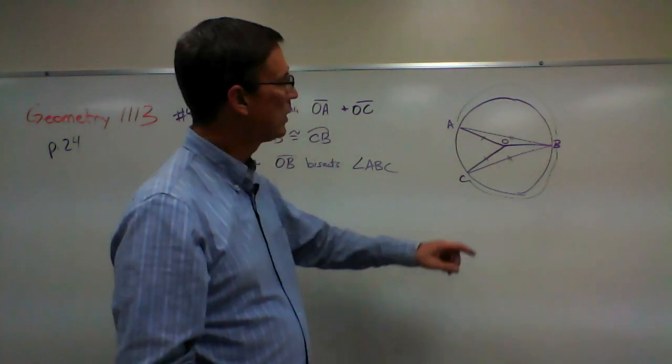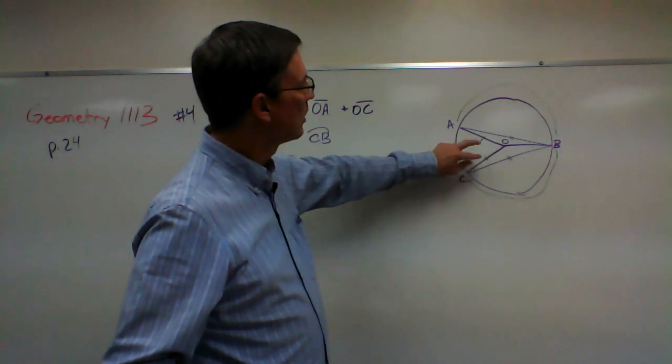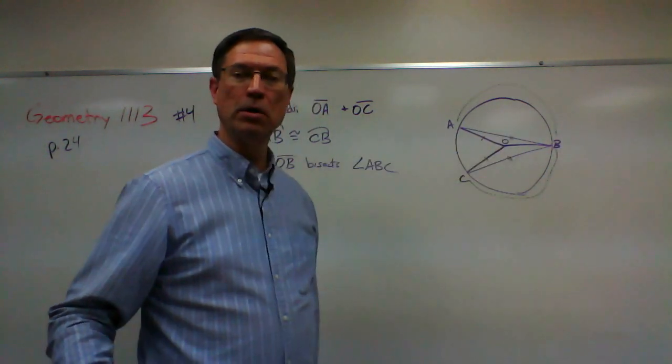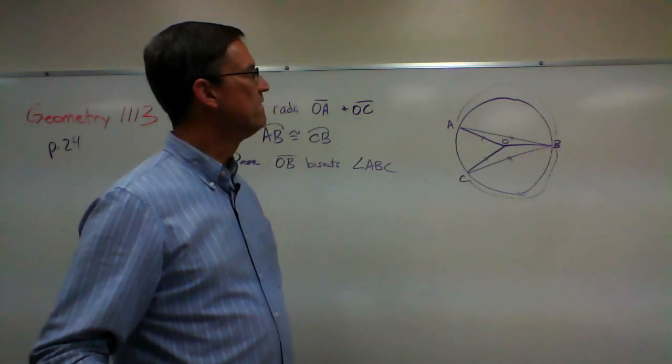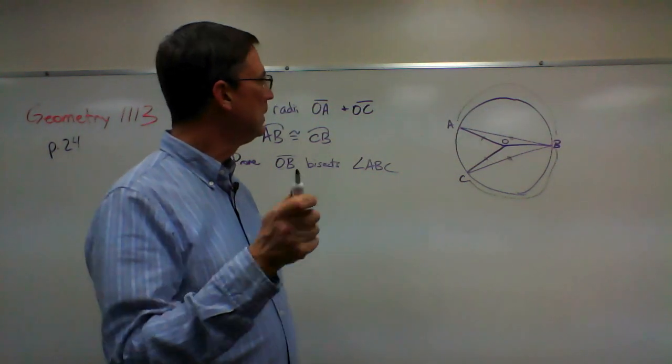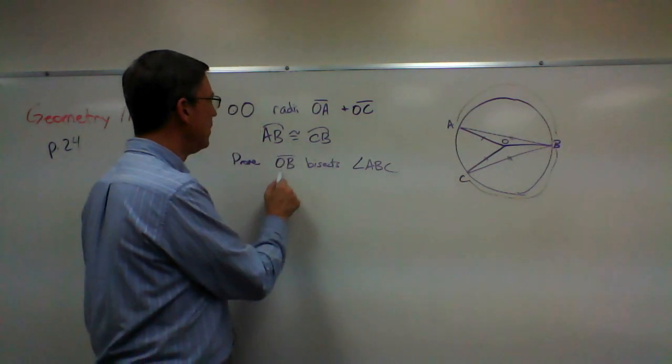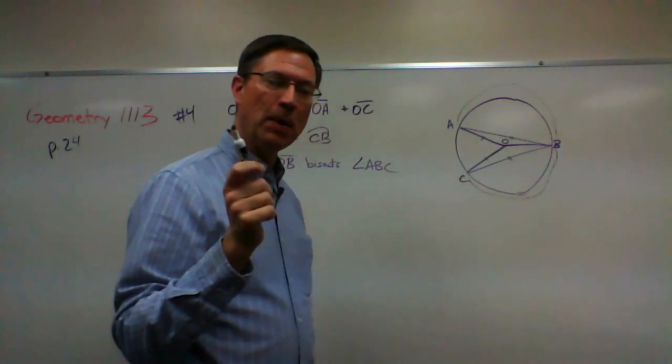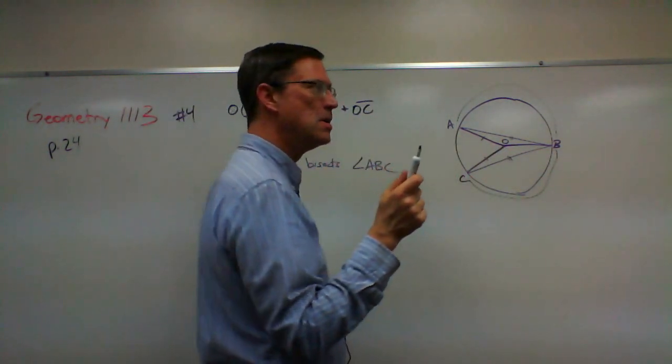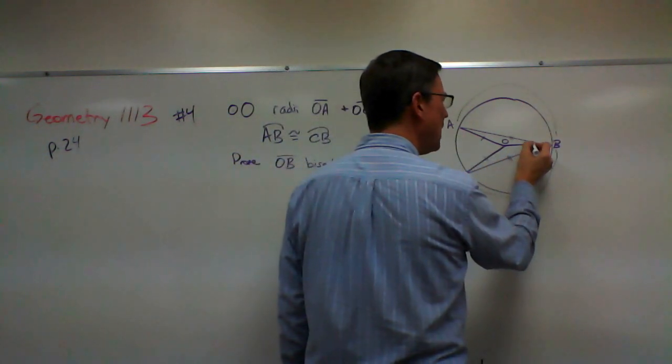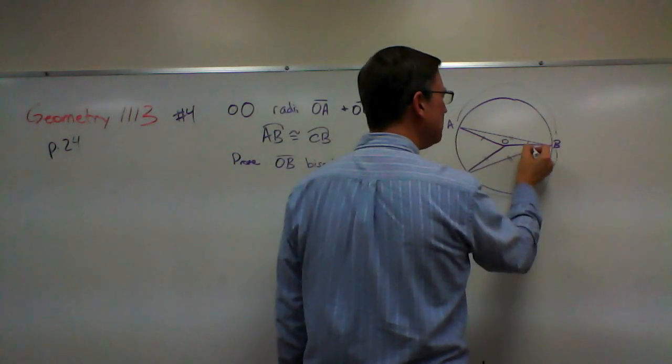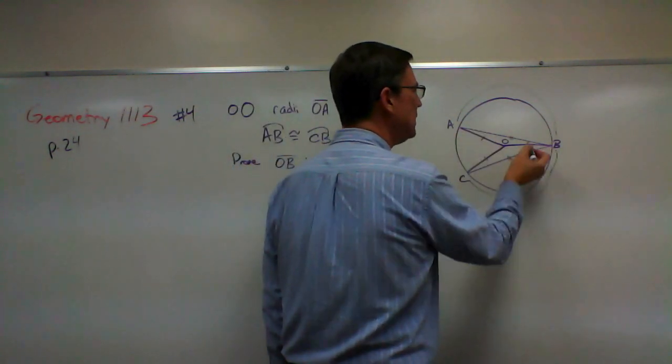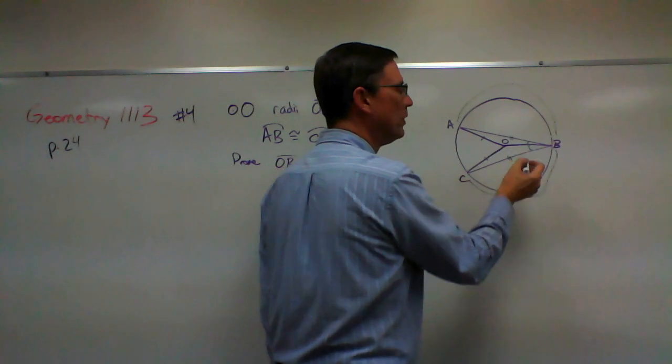You see how I'm marking it here? So the one tick mark means these two sides are congruent. A double tick, double tick means those two sides are congruent. I'm trying to lead up to prove that this bisects ABC. If it does bisect it, then this angle here would have to be equal to that angle. Does that make sense? If it bisects ABC, this angle will be equal to that angle.